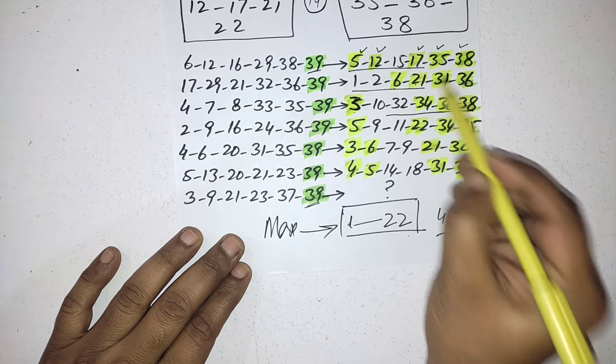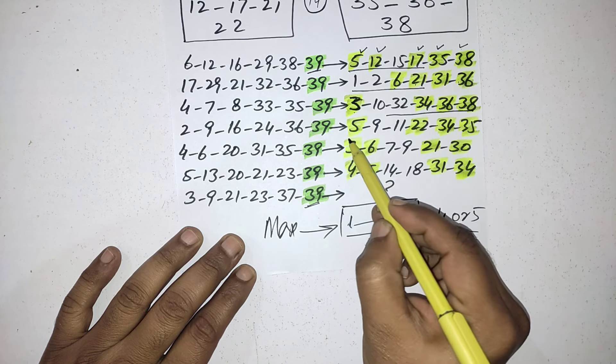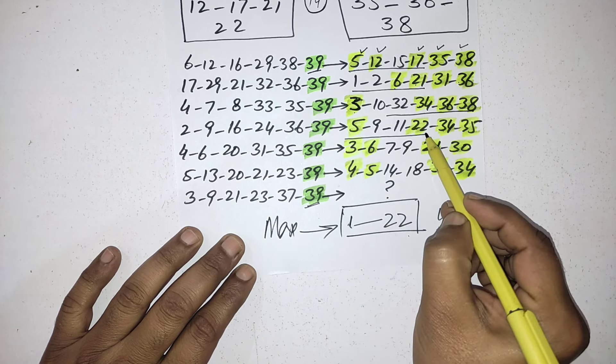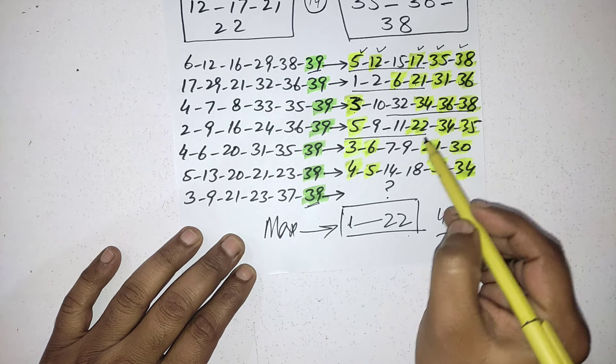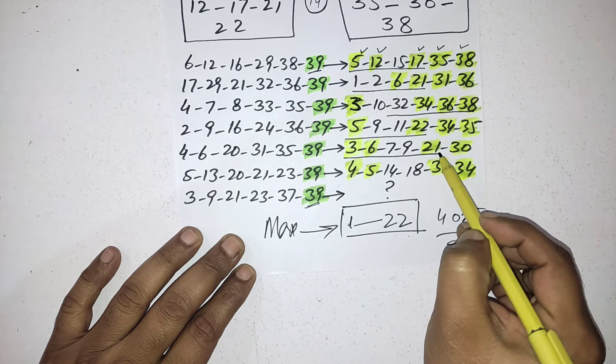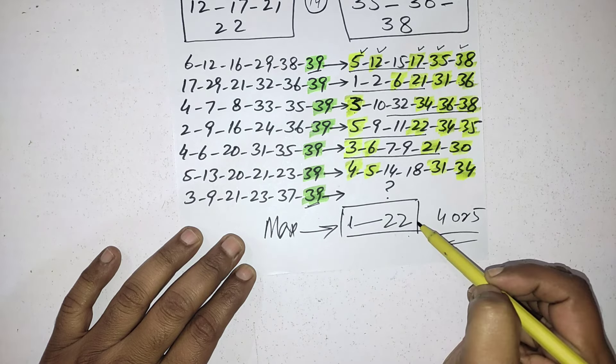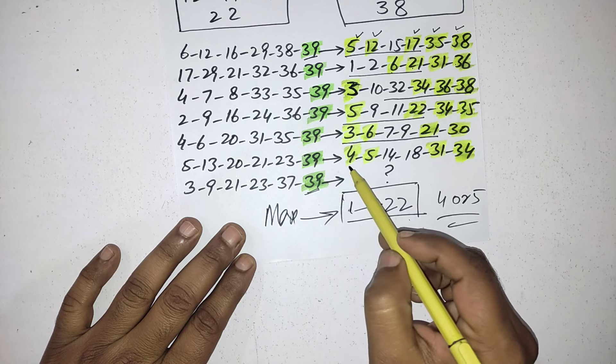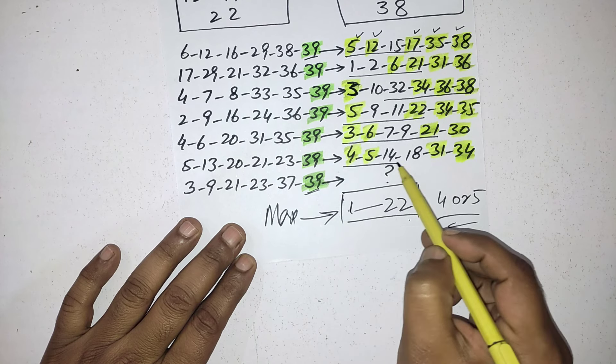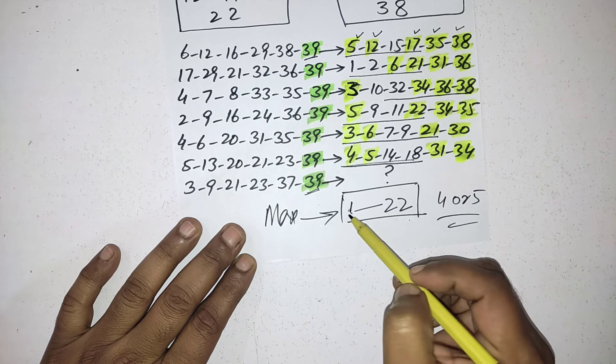First time they pick four numbers, second time again four numbers. Then third time again four numbers they pick between 1 to 22. Fourth time you can see five numbers they pick between 1 to 22.